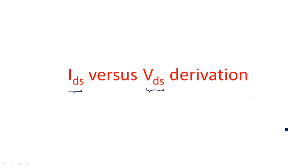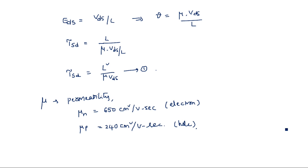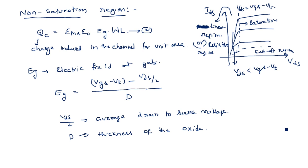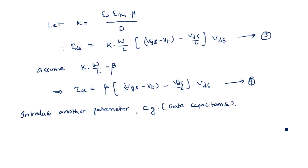In this video I am going to continue the derivation which was started in the previous video — IDS versus VDS. This is a very important derivation and you may definitely get this question in the external examination. Here we are going to derive the drain-to-source current in terms of drain-to-source voltage. I have already started with the IDS notation. The standard notation of IDS from the MOS structure is charge induced in the channel divided by electron transit time tau_sd. We calculated the denominator tau_sd, then moved to Qc in the non-saturation region. Using the standard notation epsilon naught, epsilon_ins, W, and L, we derived IDS in two terms: k and beta.